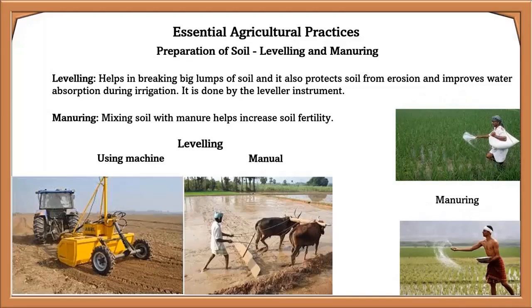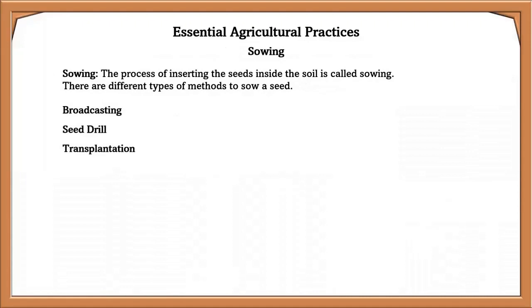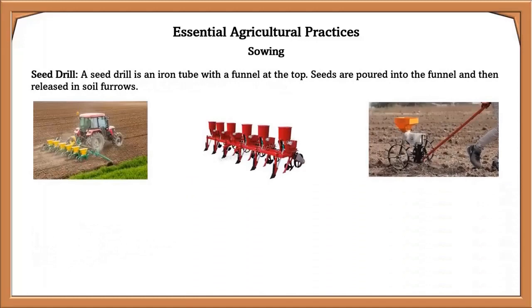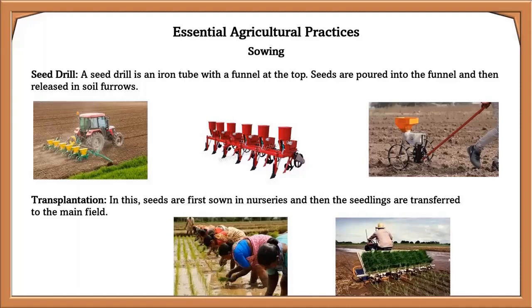Sowing is the process of inserting seeds inside the soil. There are different methods to sow a seed: broadcasting, seed drilling, and transplantation. Broadcasting is the method in which seeds are sown manually by scattering them in the soil. A seed drill is an iron tube with a funnel at the top — seeds are poured into the funnel and released into soil furrows. In transplantation, seeds are first sown in nurseries and then seedlings are transferred to the main field, for example paddy.